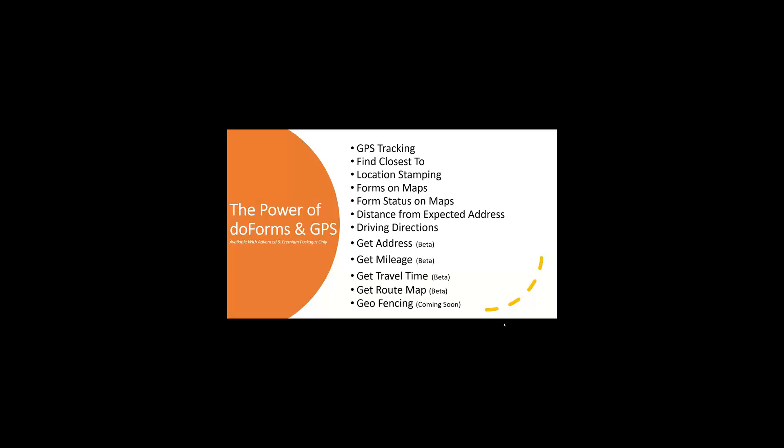The 'get mileage' feature lets you ask Google for the route across multiple addresses. For example: start from home, go to a store to buy parts, then go to the customer's location — Google returns the exact trip mileage for those stops. In addition, we can ask Google for the estimated travel time based on current traffic conditions. And 'get route map' was added so customers can produce the route map as part of an email sent for reimbursement approval.